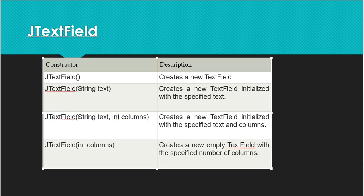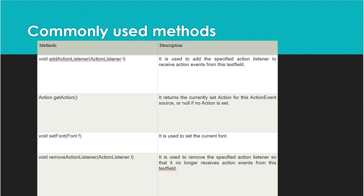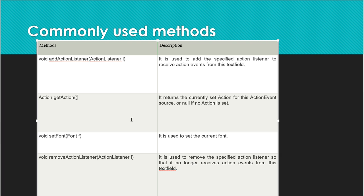The fourth constructor, JTextField(int columns), creates an empty text field with a specified number of columns. The commonly used methods of JTextField include: addActionListener() — receives action events from the text field, useful for reading values from multiple text fields; getAction() — returns the current action; setFont() — sets the font; removeActionListener() — removes an action listener. This concludes JTextField.